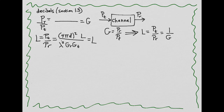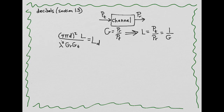Now this looks a little confusing because we have an L on the left-hand side and an L on the right-hand side — there are actually two different kinds of Ls. The L on the left-hand side is just the system losses, whereas the L on the right-hand side is the free space path loss. So just to differentiate, let's give it a subscript D — this is the free space path loss at distance D.